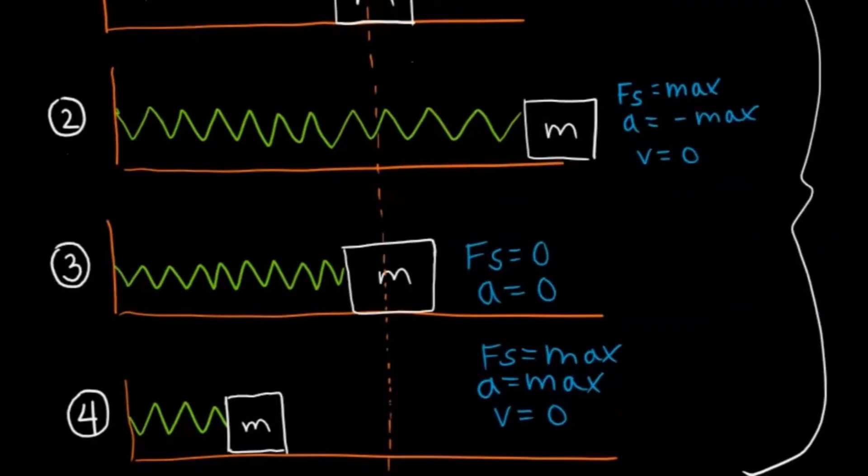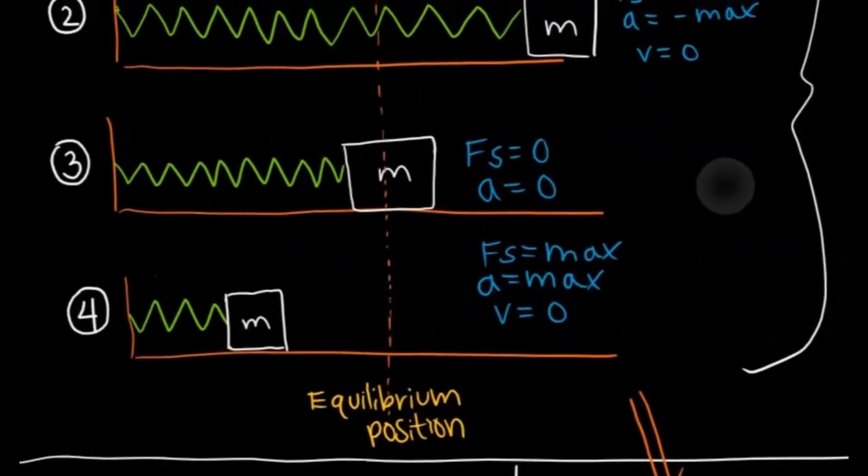So if it goes from position 2 to 3 when it's oscillating, when it reaches the equilibrium position, your force on it is going to be zero, and therefore your acceleration is also zero. And that's also when you reach your maximum velocity.